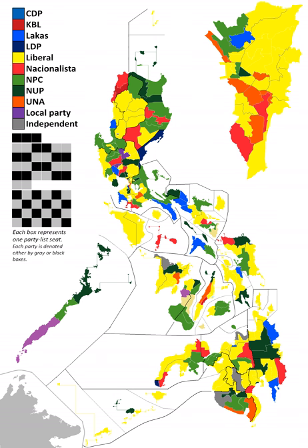Only the Liberal Party can win the election outright by placing candidates in a majority of seats. With 292 seats, including seats reserved for sectoral representatives, 147 seats are needed for a majority, and only the Liberal Party is contesting more than 150 seats. The Liberal Party did win a near majority of the district seats. They are expected to form a coalition with other Team PNOY component parties, other parties, most independents, and most party list representatives for a large working majority.